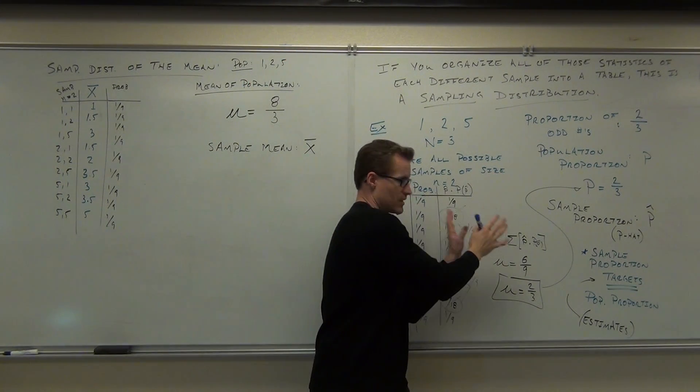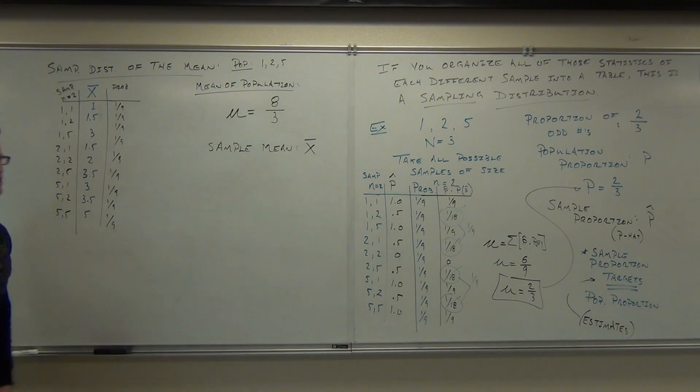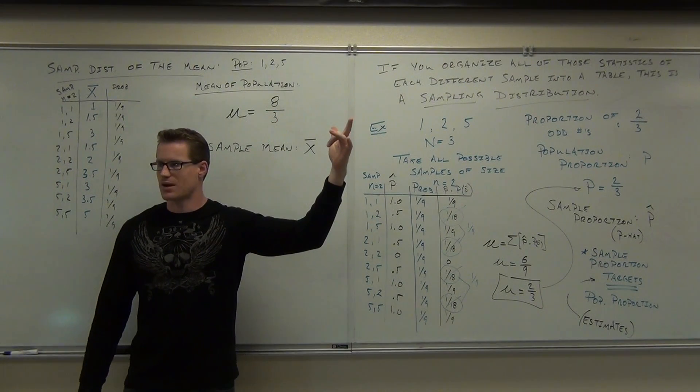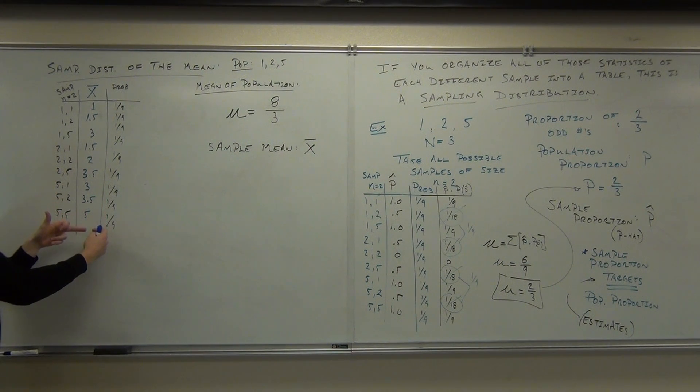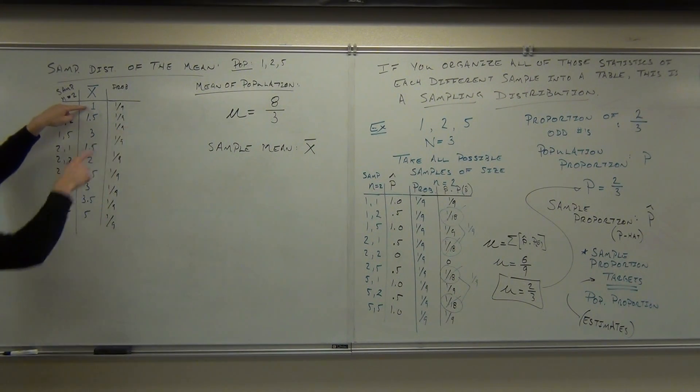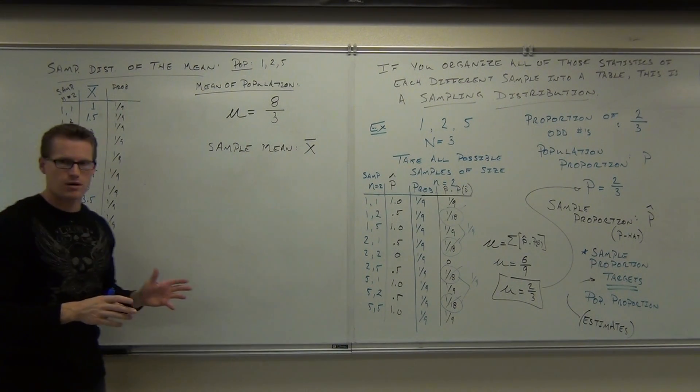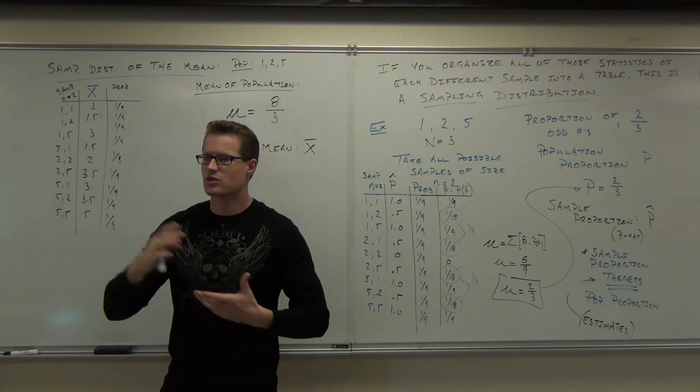Now, just like we did over here, we are going to find the average of these things. I want you to notice something. Eight thirds is two point six six six six forever. Are any of these averages two point six six six six forever? No. But look at them. Some of these are below two point six six. Some are above. It's not systematically above, it's not systematically below. Some are above and some are below.